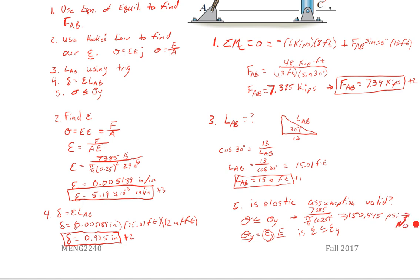So no, we shouldn't use the elastic assumption because our stress, that's greater than 36,000. Or if we went this way, epsilon Y equals 36 over 29,000, and that was 0.00124 inch per inch, which is less than, not equal to, less than our 5.19 times 10 to the negative third. So also no. Either way.